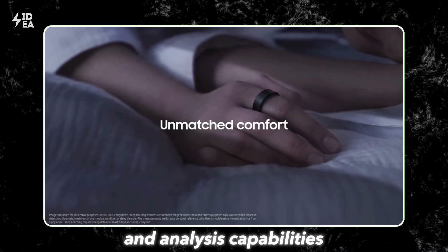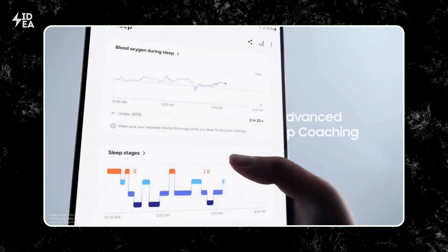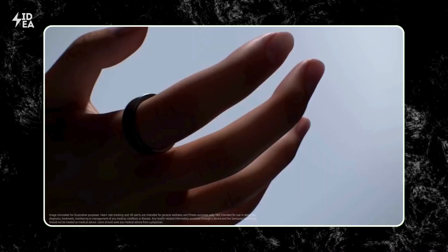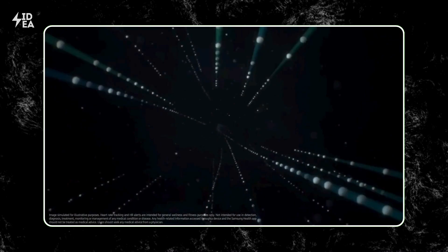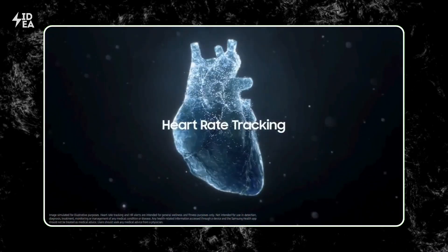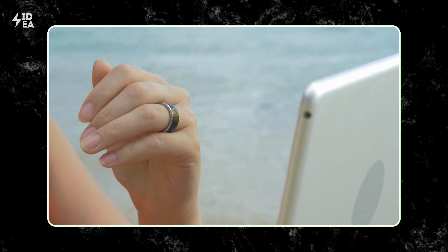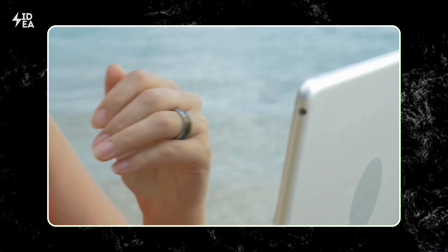Another exciting feature of the Galaxy Ring is its sleep tracking and analysis capabilities. The ring can provide detailed reports on sleep quality, helping you understand how your lifestyle and daily habits affect your sleep. You can use this data to improve your lifestyle and ensure you get quality sleep to boost your overall health.